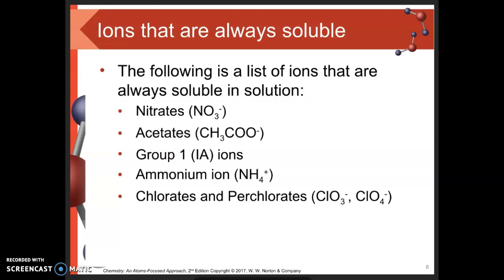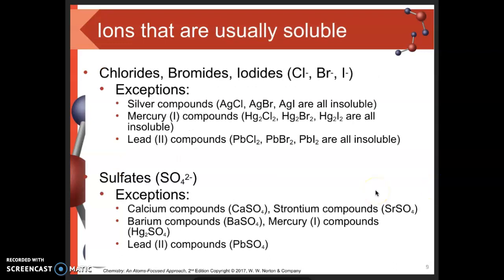In the second tier — the usually soluble group — we have halides, specifically chlorides, bromides, and iodides. These are usually soluble; pair them with most things and they will dissolve. However, there are three notable exceptions: silver compounds, mercury(I) compounds, and lead compounds. Mercury(I) is a particularly tricky ion — it involves two mercury atoms, written as Hg₂²⁺.